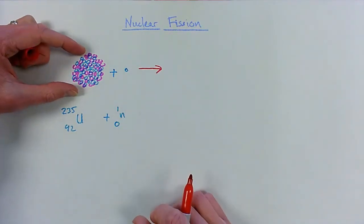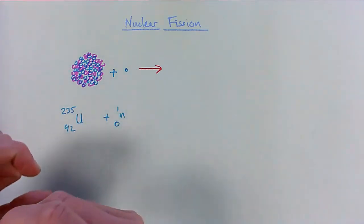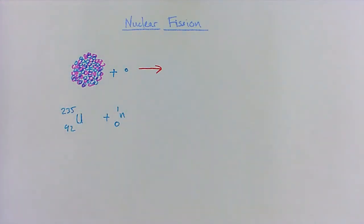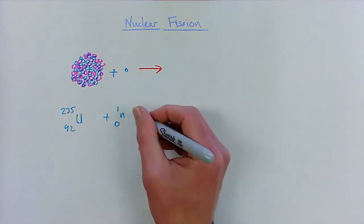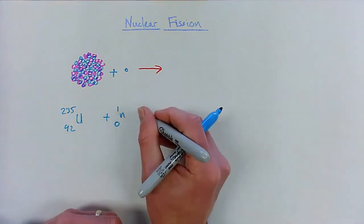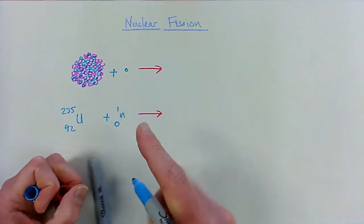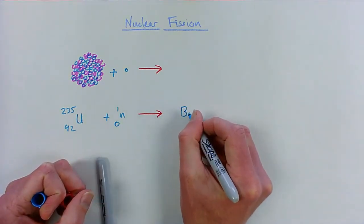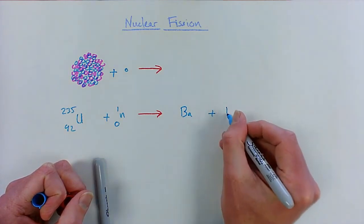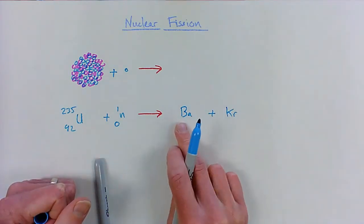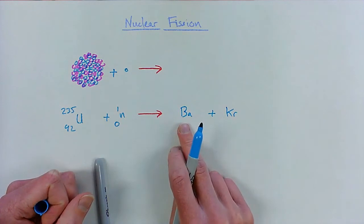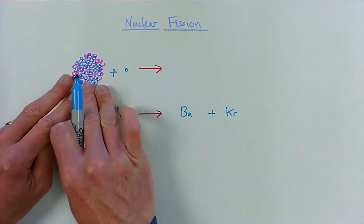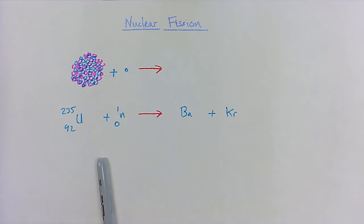One example for uranium is that it will split into barium and krypton. These are what we would call the daughter nuclei - you can see this is like the parents and these are the daughters that have come out of it. So let's draw those on: barium also has a whole heap of protons in the nucleus.